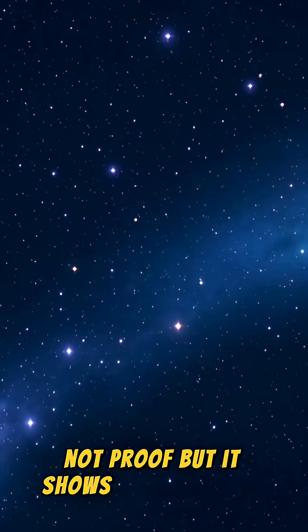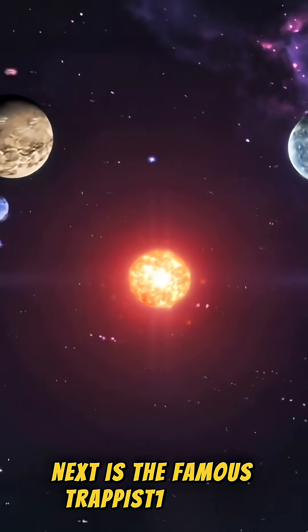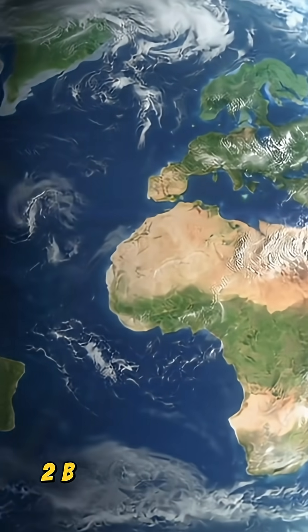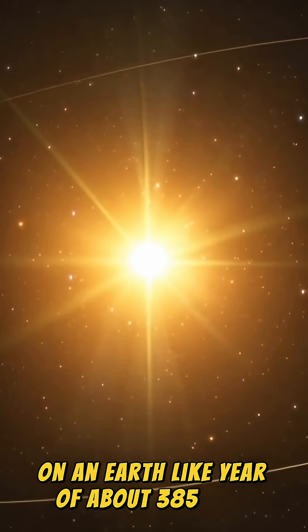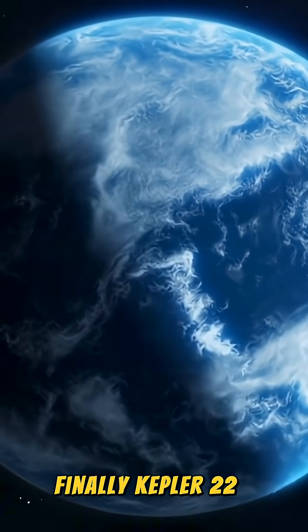Not proof, but it shows what to look for. Next is the famous TRAPPIST-1 system. Kepler-452b is an Earth-sized world on an Earth-like year of about 385 days. Finally, Kepler-22b.